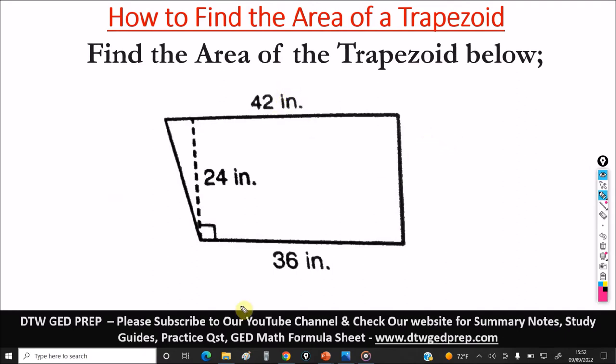So from our formula sheet, the GED formula sheet, it's given as this. The area of a trapezoid, let me just say AT, abbreviated area of trapezoid, is equal to half the height in parentheses is b1 plus b2. The b1 plus b2, then this is h. H is the height.